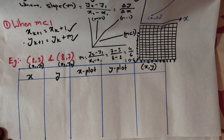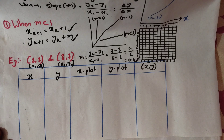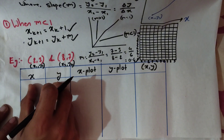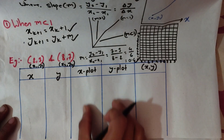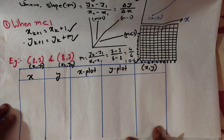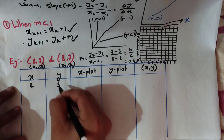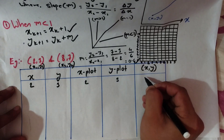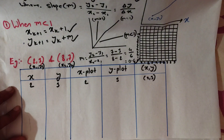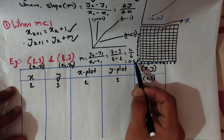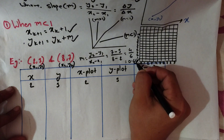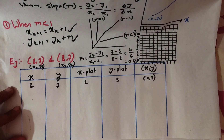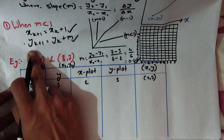Now we will build the table of intermediate points of the line. We take the initial point (1, 3) as our starting coordinate. Since the slope m is less than 1, we increment x by 1 each step and add the slope value to y. We then round off the decimal y values to get the plotted pixel coordinates.